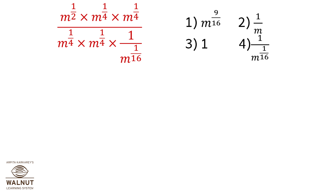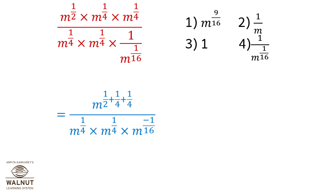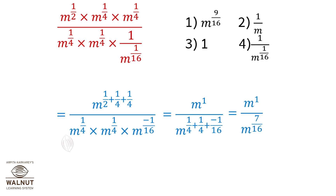M raised to 1 upon 2, multiplied by M raised to 1 upon 4, multiplied by M raised to 1 upon 4, multiplied by M raised to 1 upon 4, divided by M raised to 1 upon 16. This equals M raised to (1/2 + 1/4 + 1/4) divided by M raised to (1/4 + 1/4 + minus 1/16), which equals M raised to 1 divided by M raised to 7 upon 16, which equals M raised to 1 minus 7 upon 16, which equals M raised to 9 upon 16.